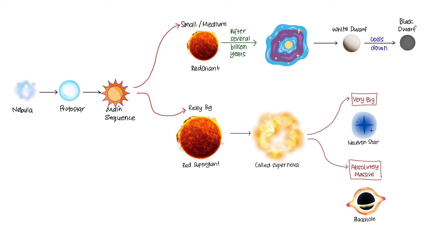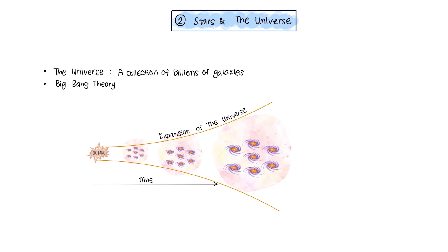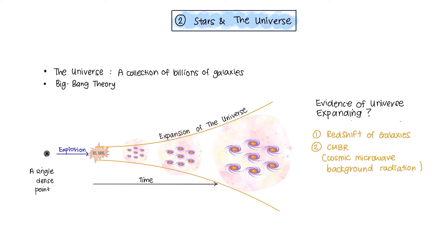A black hole is an extremely dense point in space that not even light can escape from. Okay, that wraps up everything for the life cycle of a star. The last thing we need to look at is the evidence for the universe expanding. Universe has been a single dense point and all of a sudden it exploded and space itself started to expand. So, what is the evidence for the universe expanding? The first one is redshift of galaxies and the second one is the cosmic microwave background radiation.